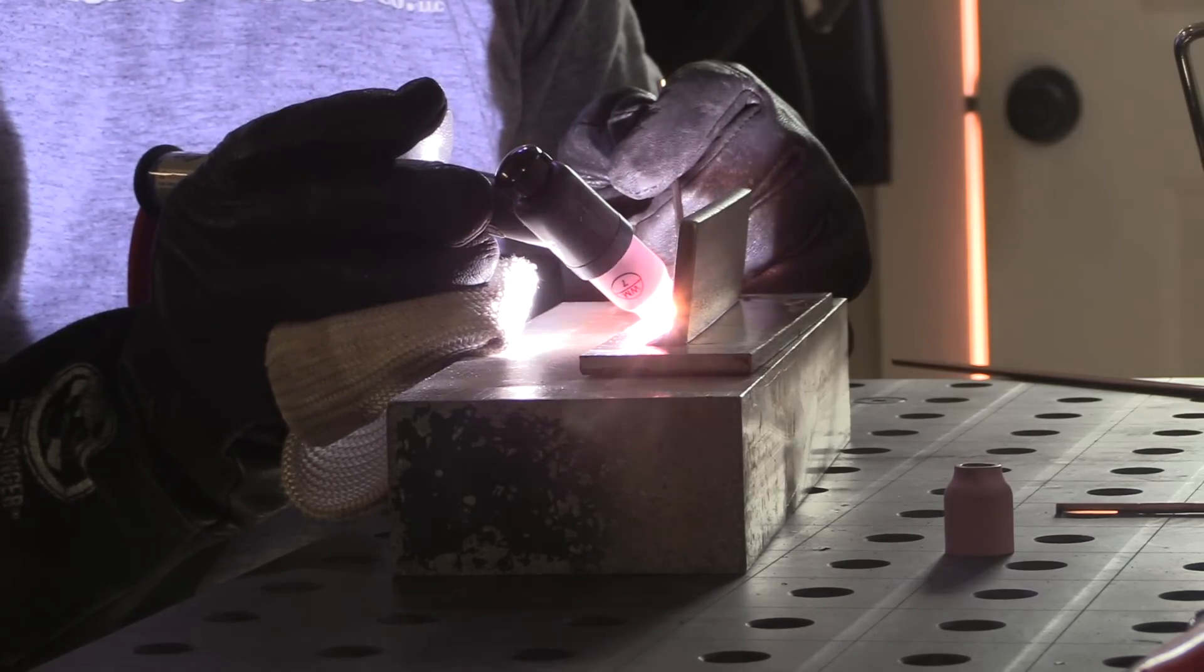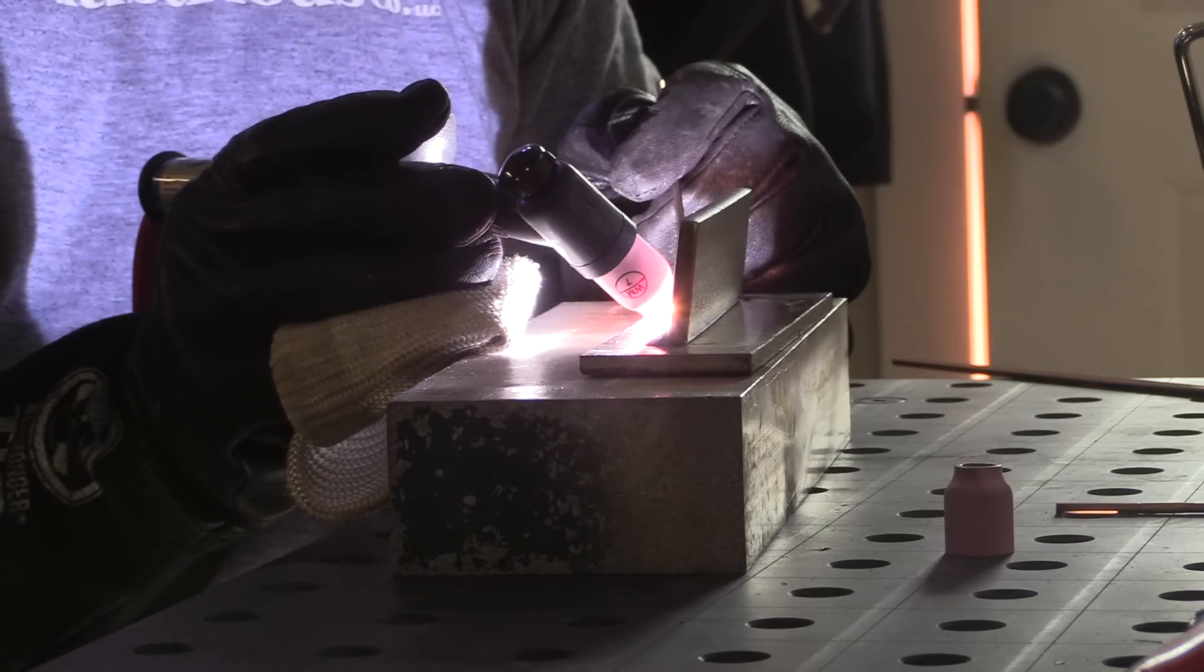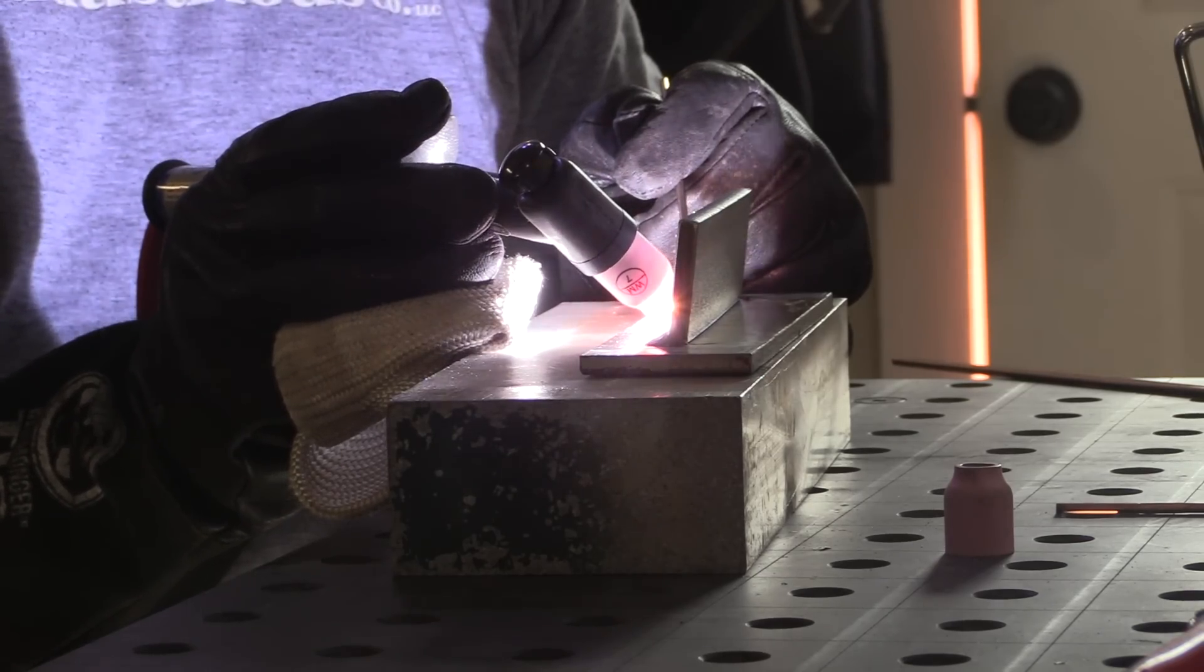It's easy to get lack of fusion in the root pass using a one-eighth wire unless you use quite a bit of amperage. So I'd like to be up around 190 amps or so here.